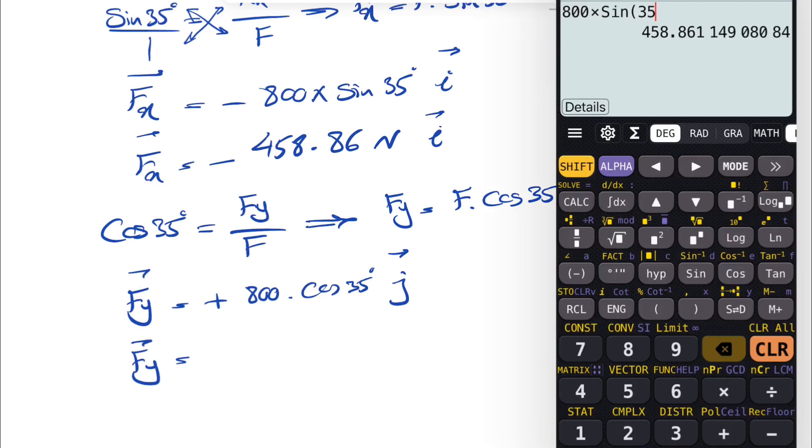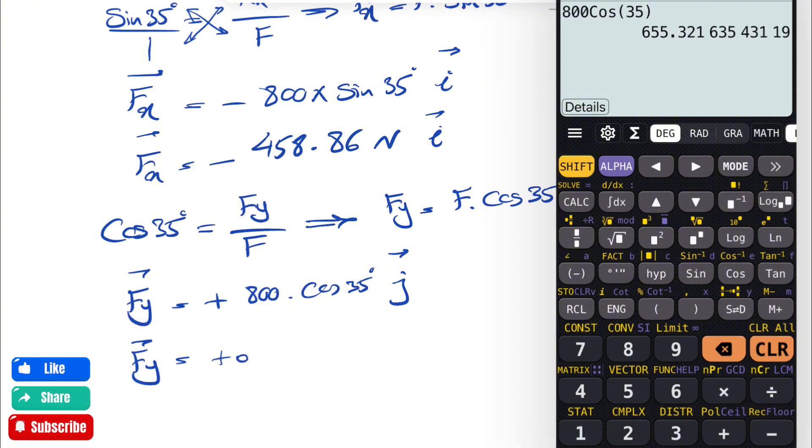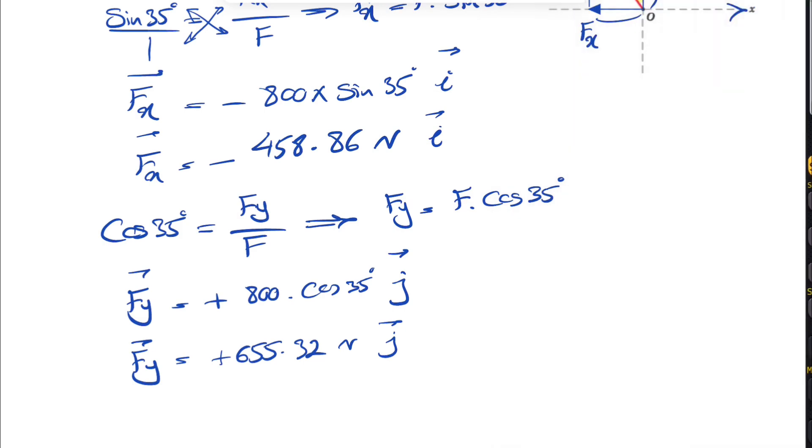This time we have 800 cosine of 35 degrees, which is going to be plus 655.32 newtons, and j would be our unit vector.